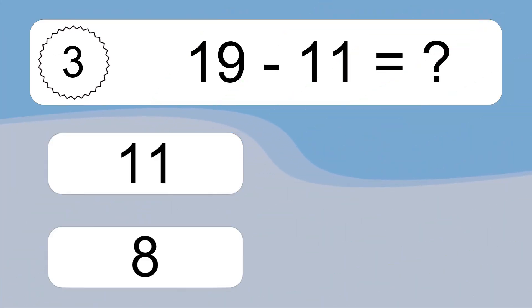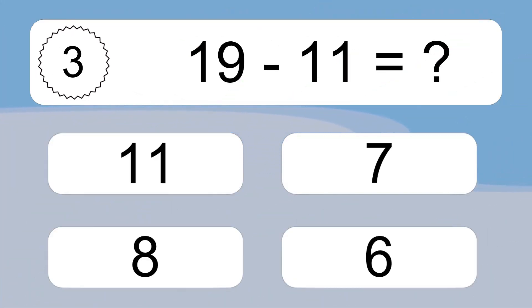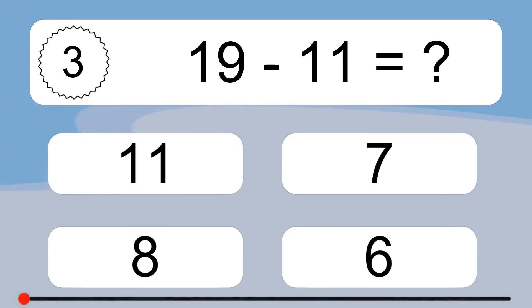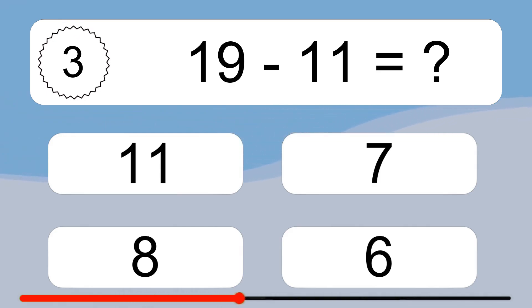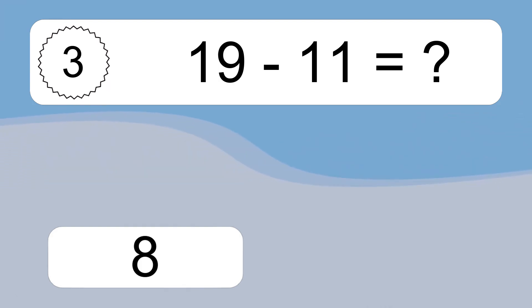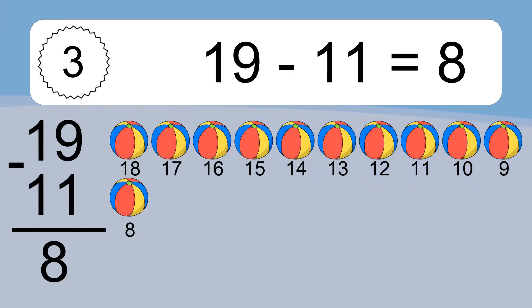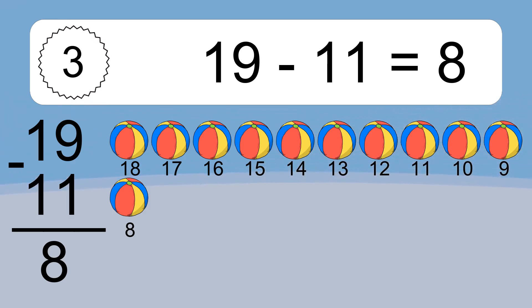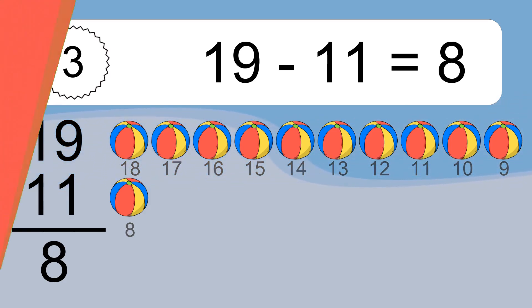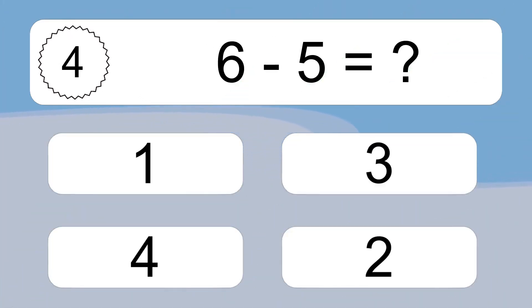19 minus 11 equals what? 19 minus 11 equals 8. Let's count it: 18, 17, 16, 15, 14, 13, 12, 11, 10, 9, 8.